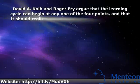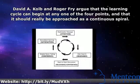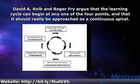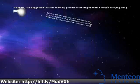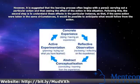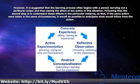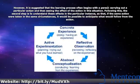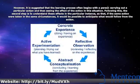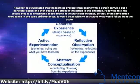David A. Kolb and Roger Fry argue that the learning cycle can begin at any one of the four points, and that it should really be approached as a continuous spiral. However, it is suggested that the learning process often begins with a person carrying out a particular action and then seeing the effect of that action in this situation. Following this, the second step is to understand these effects in the particular instance, so that if the same action were taken in the same circumstances, it would be possible to anticipate what would follow from the action.